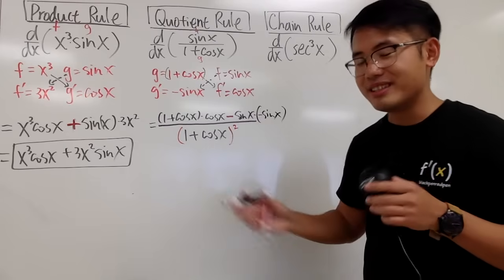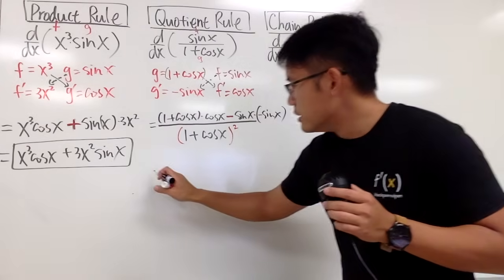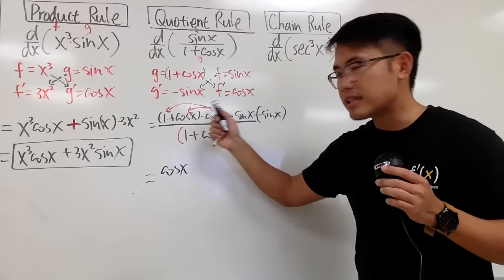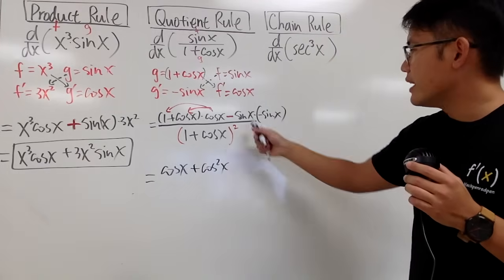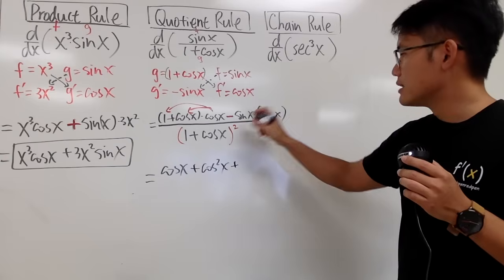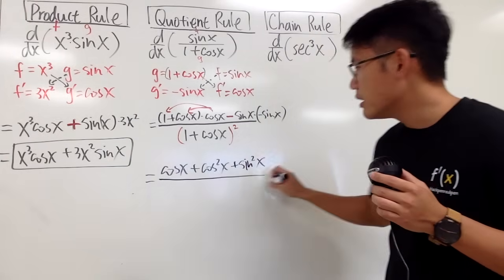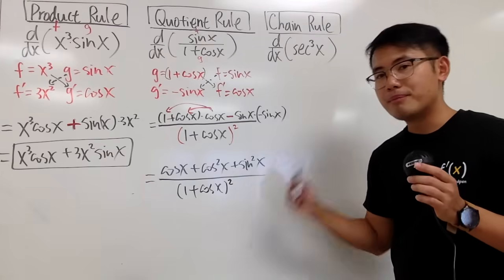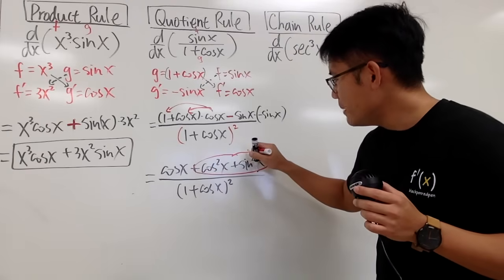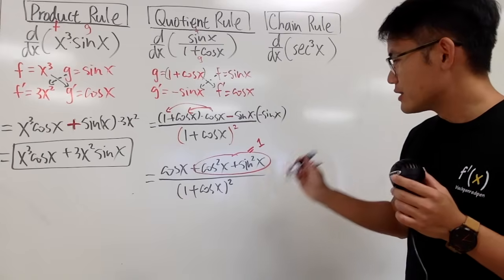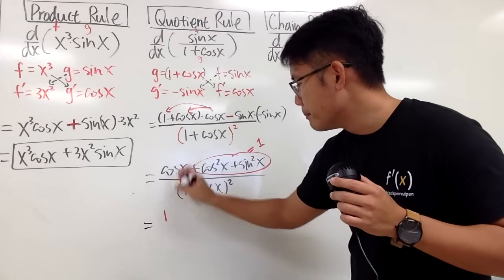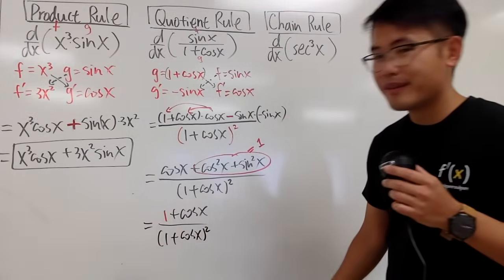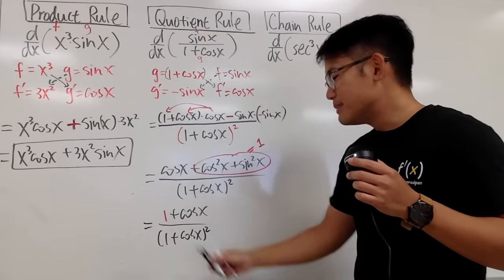From here, the rest is just combining terms. Distributing on the top: cosine x times 1 is cosine x, cosine x times cosine x is plus cosine squared x, and negative times negative gives plus sine squared x. The denominator is 1 plus cosine x, squared. Now cosine squared x plus sine squared x famously equals 1. So we can rewrite the numerator as 1 plus cosine x, over 1 plus cosine x squared. And since the top and one factor of the bottom are the same, we can cancel one of them out.